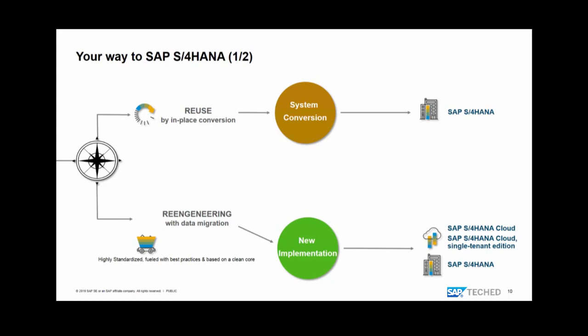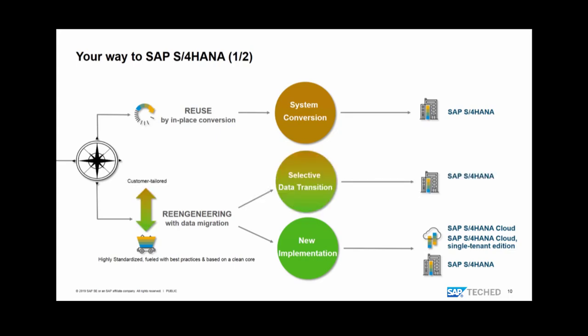If you require historical data or want a more selective and flexible approach, we have another option: selective data transition. This is currently only possible with S/4HANA On-Premise as a target, and we're planning to have it available for single tenant edition as well. It's a more customer-tailored approach — it also involves some re-engineering, but not a complete re-engineering.